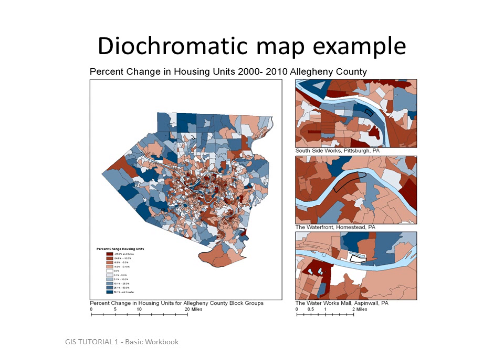Here's another example of a dichromatic map — in this case, percentage change in housing units in Allegheny County, Pennsylvania. The negative values are in deep reds, the positive values in darker blues, and the middle is closer to white or light gray.